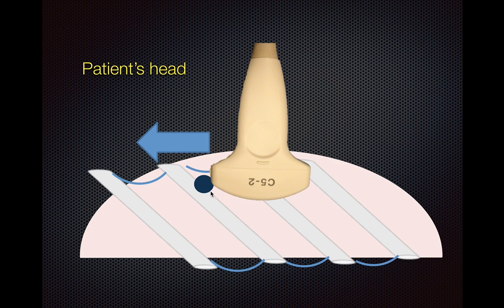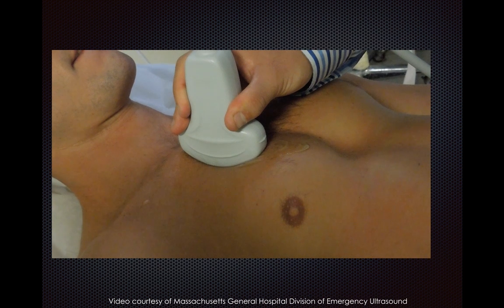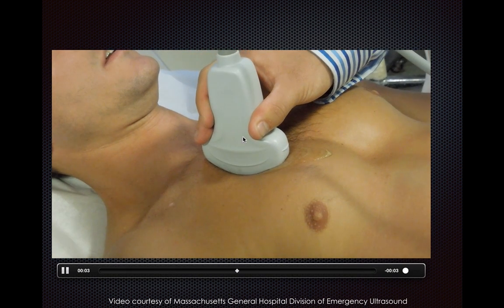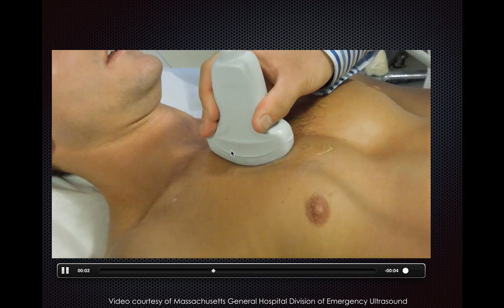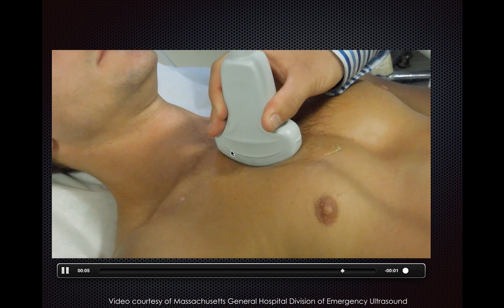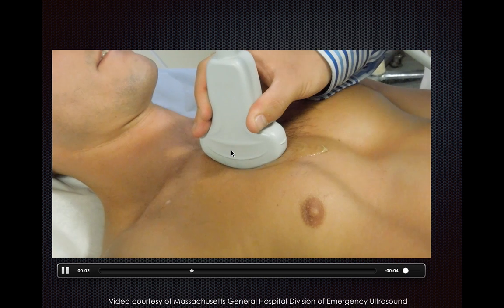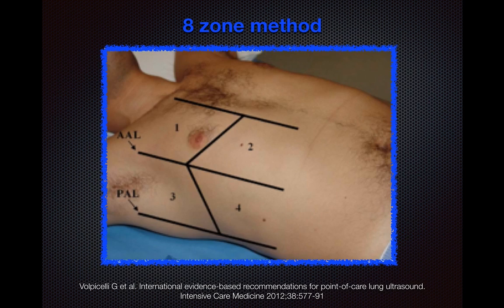You can use any of the transducers, but we highly recommend the curvilinear to start. When performing lung ultrasound, place your transducer longitudinally to identify two rib spaces. You want to image between the two ribs while ensuring the actual ribs are visible in your image — a longitudinal image is what you want to generate. By convention, place the transducer marker towards the patient's head.